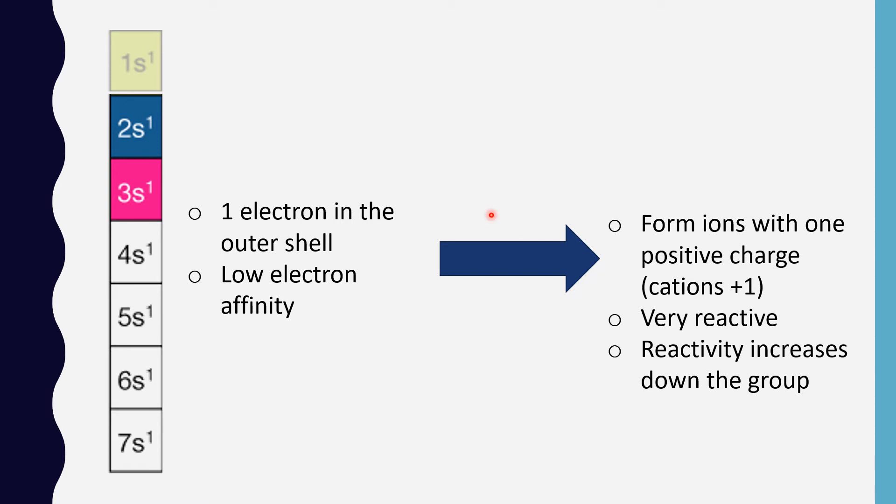Because it's easier to give off one electron than two or three or four, they're very reactive, and reactivity is going to be increasing down the group. Why? Because the atomic radius is going to be increasing, the outer shell is going to be farther away from the nucleus, and the effective nuclear charge is not going to be acting on the electron as strongly. The distance between the nucleus and the outer electron is going to be greater, so it's going to be easier to give off the electron.